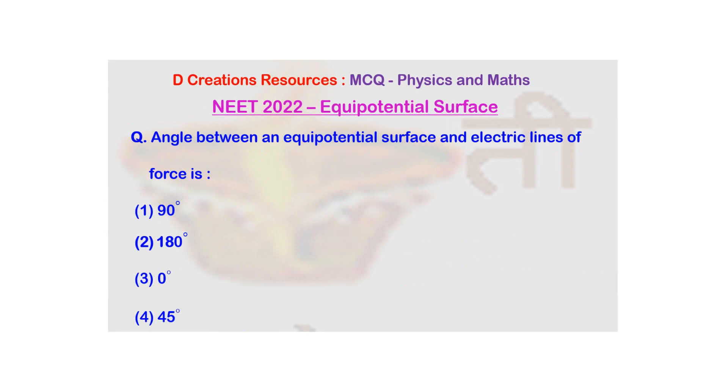For example, from the earlier definition, if W was written as Q into V at point P minus V at point Q, here, V at point P and V at point Q are equal since they belong to an equipotential surface. So, the work done is just going to be Q into 0 and it will be 0 itself.